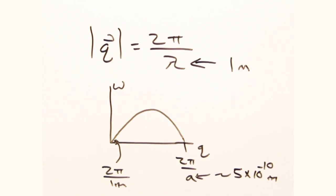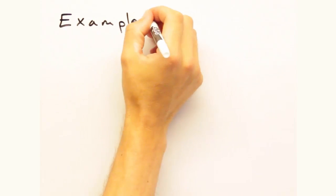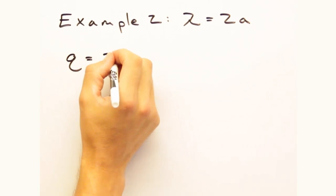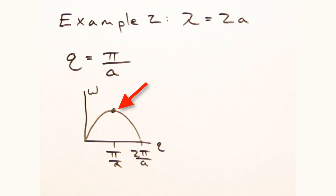So down near the origin, we're talking about waves that have such long wavelengths that the local displacements are close to equal. Right, so let's look at a much shorter wavelength, say 2a,